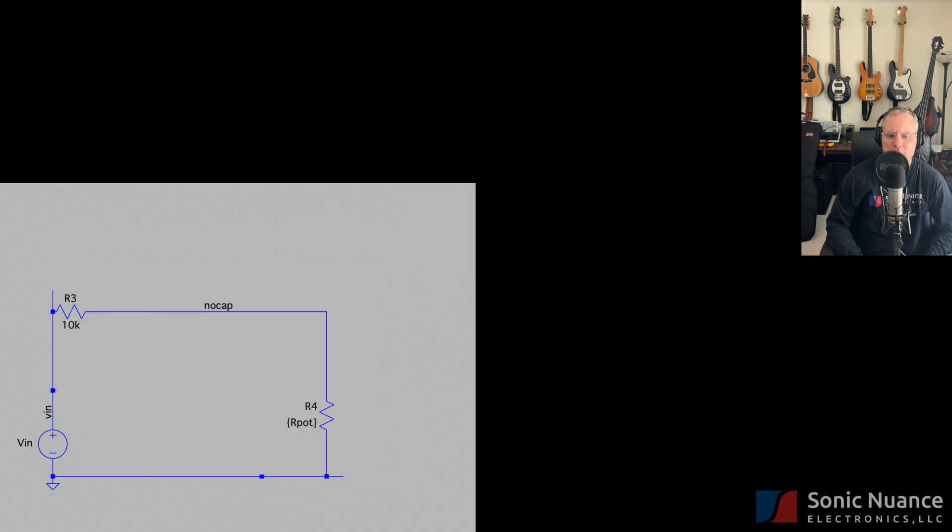Let's look at the tone control with no cap. Let's set the pot to 1k ohms and investigate the effect. You may recognize this circuit from our video on voltage controls. This is simply a voltage divider circuit.